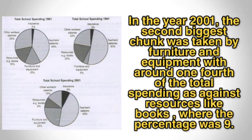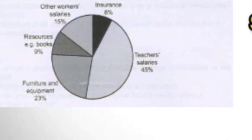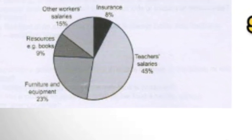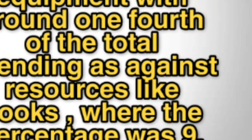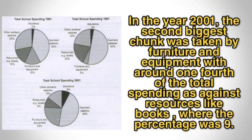In 2001, the second biggest chunk was taken by furniture and equipment. The second highest proportion went to furniture and equipment, with around one fourth of the total spending — that is 23%.